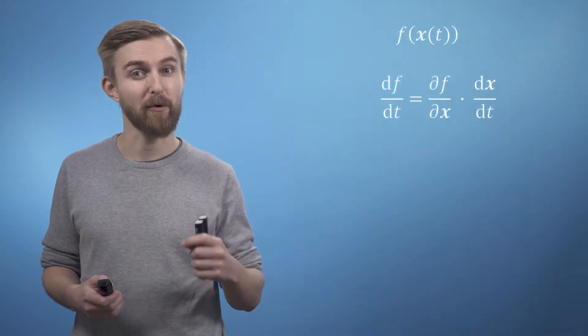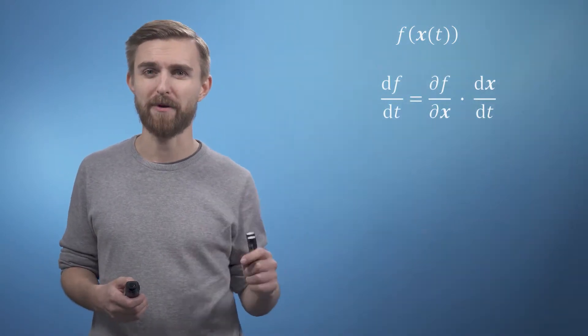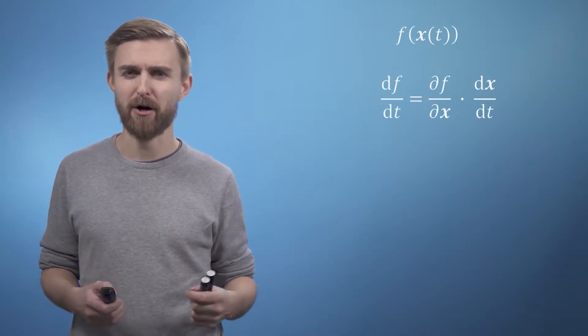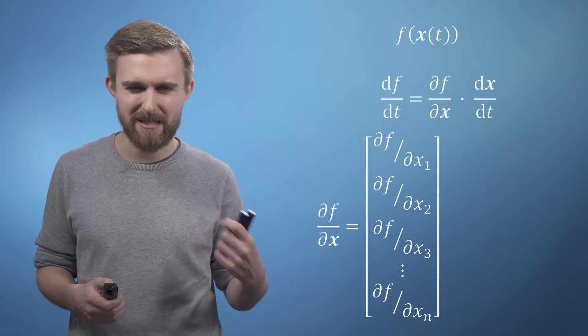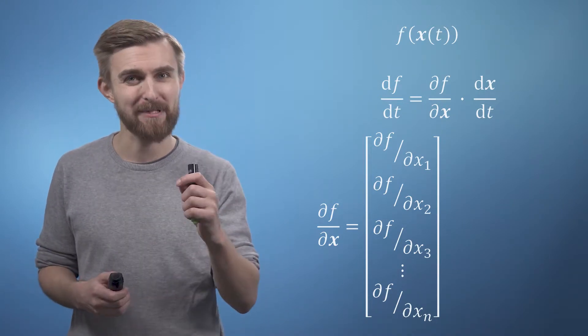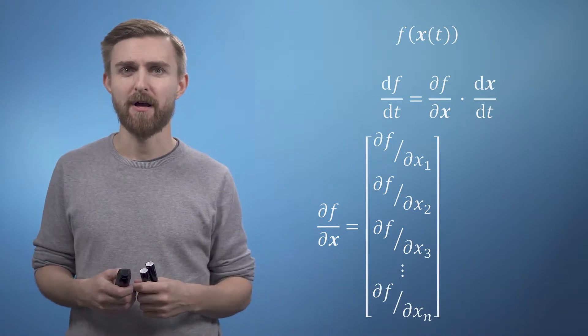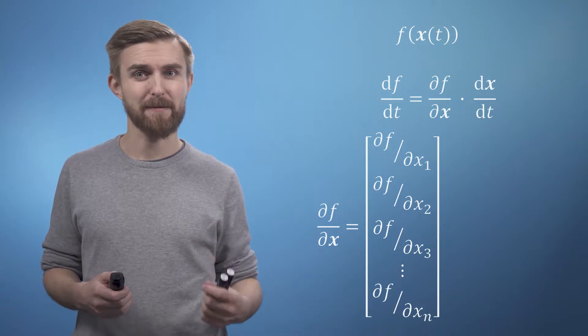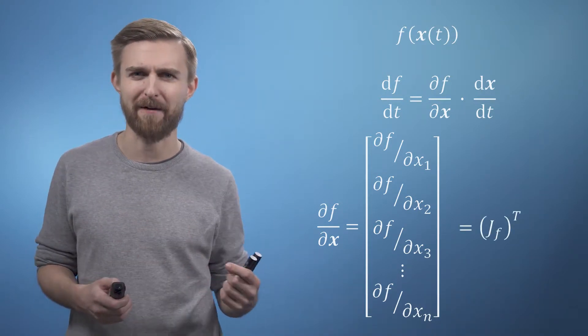If we have a function f, where x is a vector in which each term in x depends on t, which we can compactly write like this, we also have our compact form of the multivariate chain rule to go with it. What I hope you might have noticed last time is that our vector of partial derivatives, df by dx, is just the same as the Jacobian vector which we saw last module, except that we wrote it as a column instead of a row vector. So from our knowledge of linear algebra, we can say that df by dx must be the transpose of the Jacobian of f.